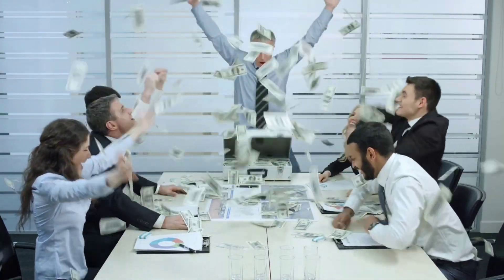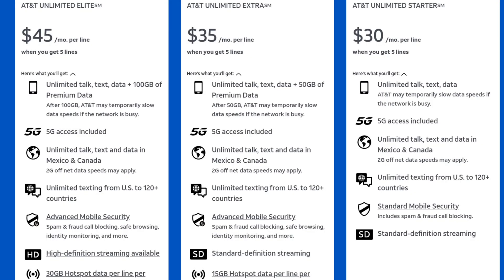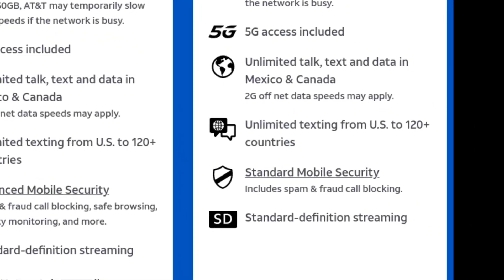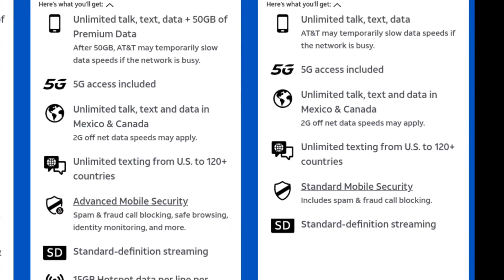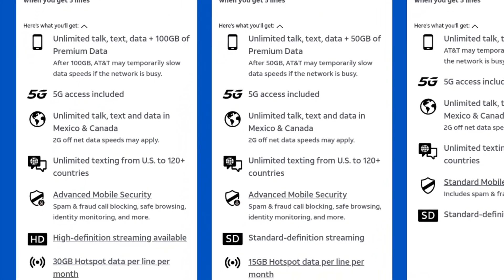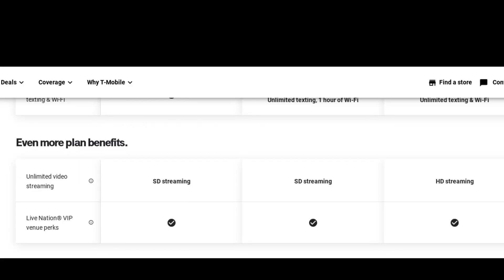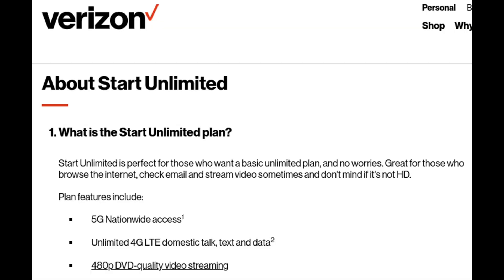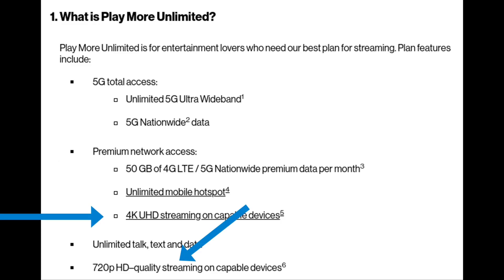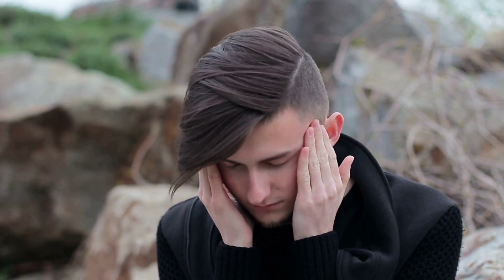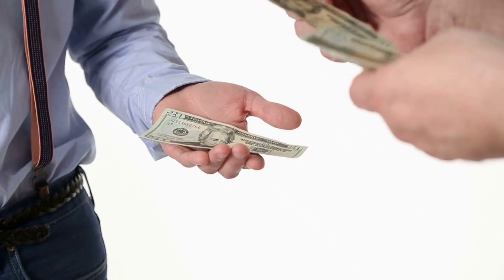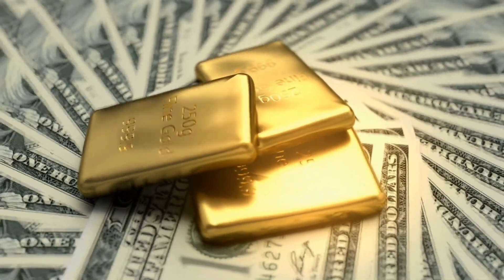They got away with it, but they didn't stop there — they started offering customers special data plans for more money to get the same video quality they were giving them before. For example, with AT&T, for $30 you get standard definition (about 720p), but for $15 more you can get HD streaming (about 1080p). T-Mobile does the same thing — standard, then HD. Verizon is actually the worst: as low as 480p, then 720p, and if you pay the most you can get 4K. They sold you a phone capable of high quality video and then made it so you can't use that quality on their network unless you pay even more.